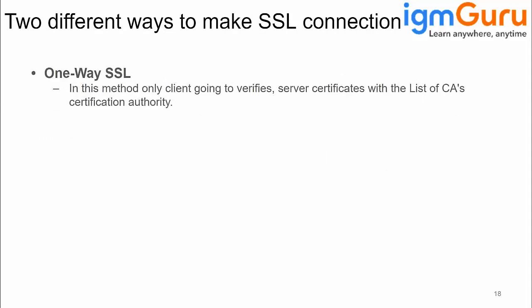Now, one-way SSL — I was talking about amazon.com, google.com. Whatever public sites are there, they all use one-way SSL. So what happens in one-way SSL? Only the client verifies whether it is connecting to the right server, like the right amazon.com or not. That is called one-way SSL.